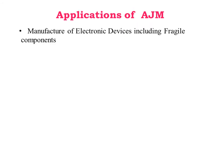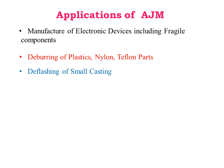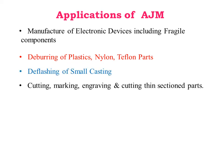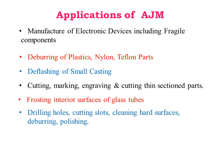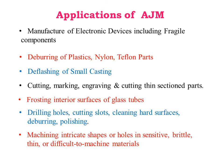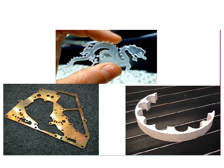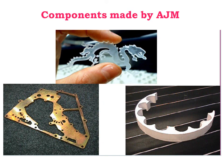Applications of AJM process: Manufacture of electronic devices including fragile components. Deburring of plastic, nylon, and teflon parts. Deburring of small castings. Cutting, marking, engraving, or cutting thin section parts. Frosting interior surfaces of glass tubes. Drilling holes. Cutting slots. Cleaning hot surfaces. Deburring and polishing. Machining of intricate shapes or holes in sensitive, brittle, thin, or difficult-to-machine materials. These are some components made by the AJM process.